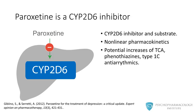Paroxetine is one of the most potent cytochrome P450-2D6 inhibitors in the SSRI class. It is a substrate for and an inhibitor of this isoenzyme. Paroxetine has non-linear pharmacokinetics, meaning that higher doses can produce disproportionately greater plasma drug concentrations as the enzyme becomes saturated. By inhibiting CYP450-2D6, paroxetine has the potential to increase concentrations of tricyclic antidepressants, phenothiazines, and type 1C antiarrhythmics.